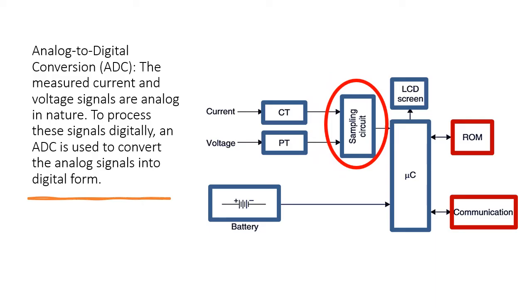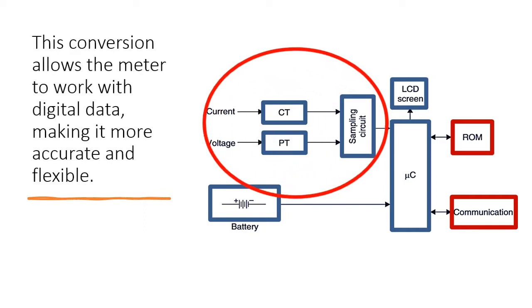The measured current and voltage signals are analog in nature. To process these signals digitally, an analog-to-digital converter (ADC) is used to convert the analog signals into digital form. This conversion allows the meter to work with digital data, making it more accurate and flexible.